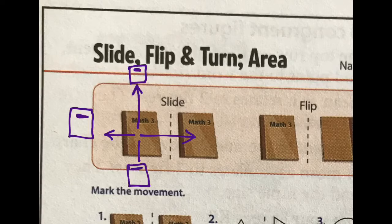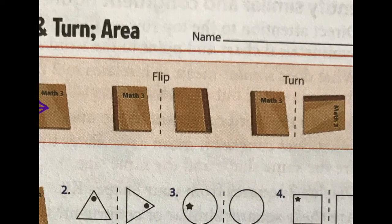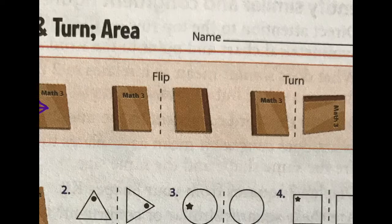Basically all they did was they took the book and they slid it over that way. They didn't turn it. Everything else is the same. They also could have slid it up this way, and the title would still be at the top. They could have slid it to the left, and the title would still be at the top. Or they could have slid it down here. And where do you think the title would be? Yes, at the top.